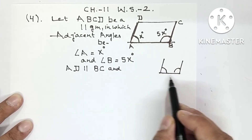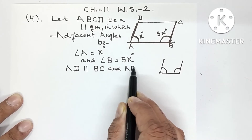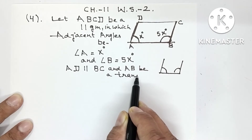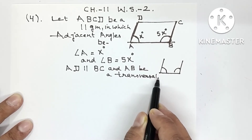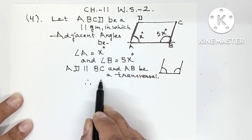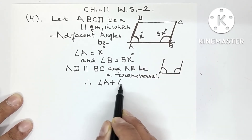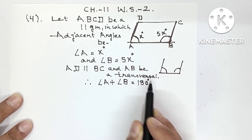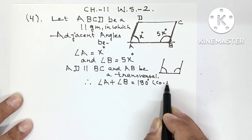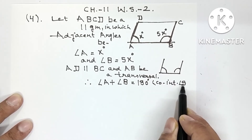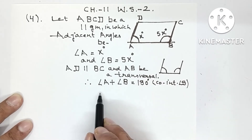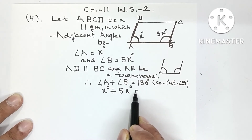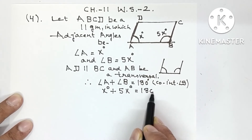Let me show you roughly — AB is the transversal. Therefore, angle A and angle B are co-interior angles, both formed on the same side of the transversal. So we write: angle A plus angle B = 180 degrees. The reason is co-interior angles. So X degrees plus 5X degrees = 180 degrees.